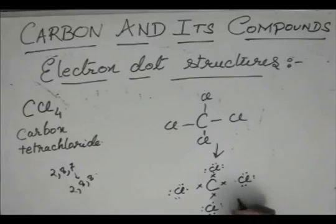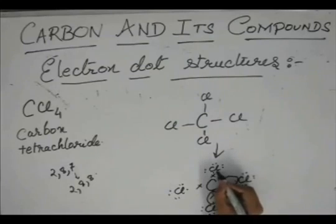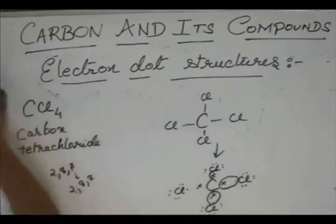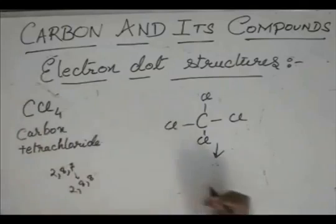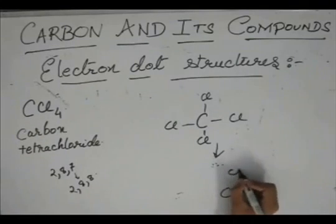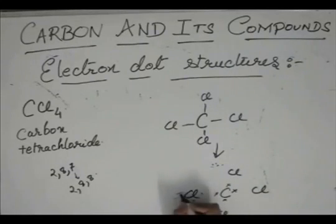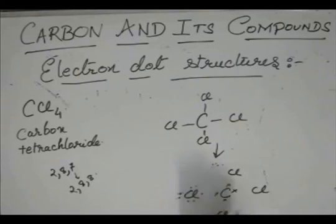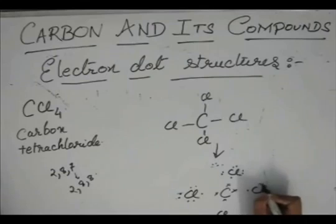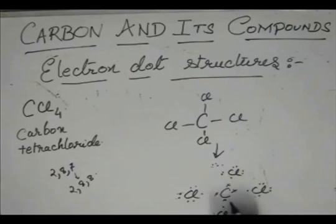CL needs just one electron, so give it the electron of carbon. Each chlorine has 7 electrons counted out: 1, 2, 3, 4, 5, 6, 7 — for each of the four chlorines. This should be the complete structure.